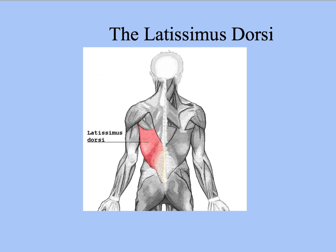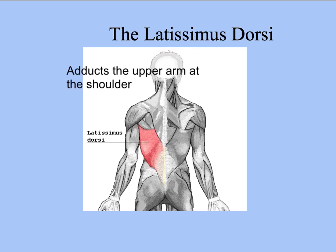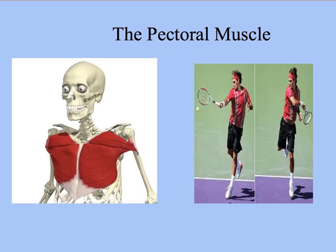The latissimus dorsi is located in the side of the back — note the spelling: one T, two S's. When it contracts, it adducts the upper arm at the shoulder, bringing it back towards the body. A sporting example is trampolining, where after a straight jump the arms are brought back to the side. The pectoral muscles are located at the front of the upper chest. Similar to the latissimus dorsi, they also adduct the arm at the shoulder joint, bringing the whole arm down towards the center line of the body.